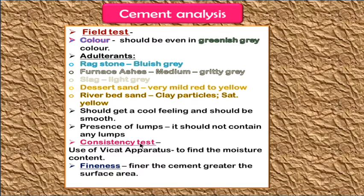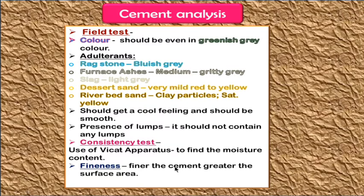Next, the consistency test — used to determine whether the cement is consistent and good quality, using the VICAT apparatus, which measures moisture content. Then fineness: if the cement is finer, it has more surface area, since smaller particles yield greater surface area.